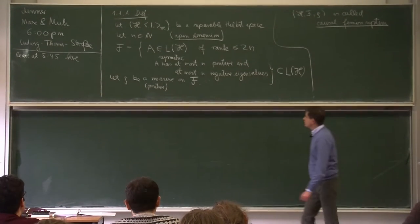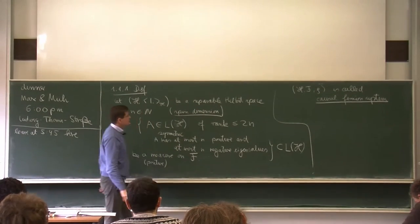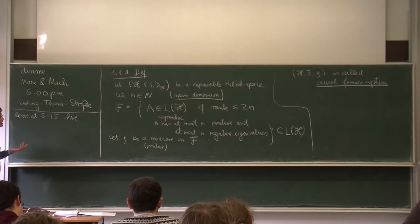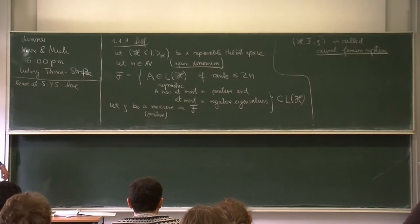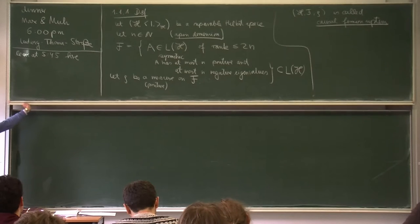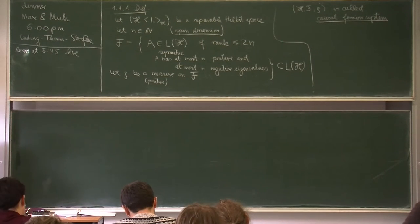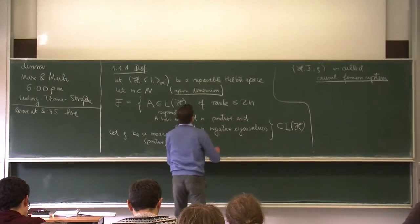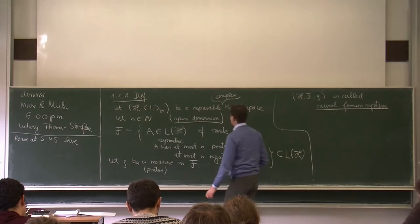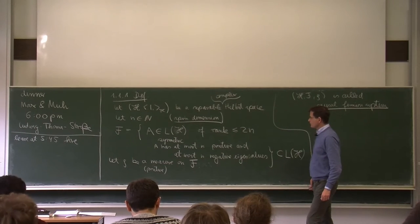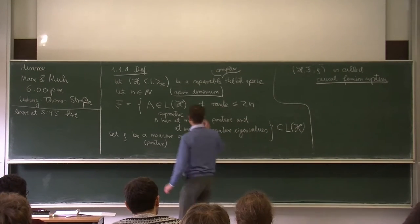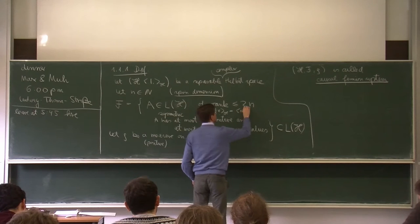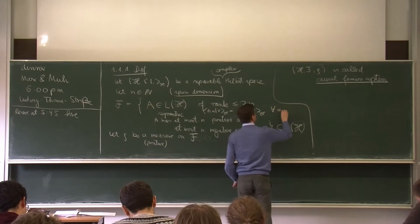A few remarks: first, the separability assumption on the Hilbert space means we assume it has an at most countable basis. This is more of a technical assumption for convenience — when we work with bases, it's better to assume separability, and all applications we have in mind work fine with separable Hilbert spaces. Also, this is always a complex Hilbert space. Symmetric here means self-adjoint: the operator satisfies <u, Av> = <Au, v> for all u, v in H.